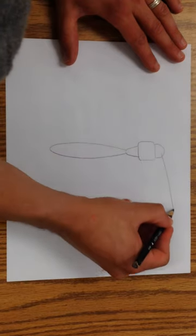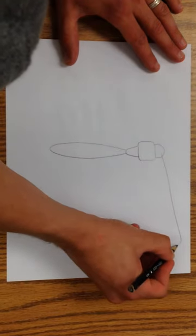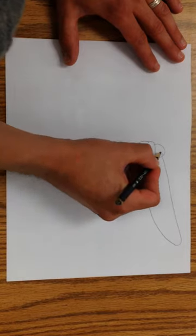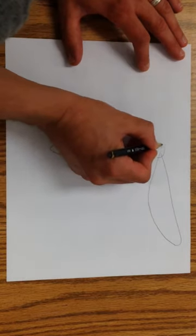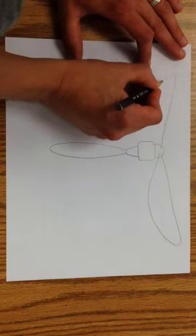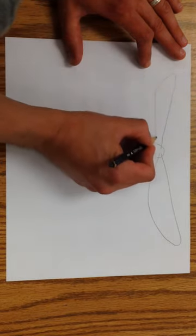Curve it around the bottom part, then come back up. They're symmetrical, so we're going to do the same thing on the other side.